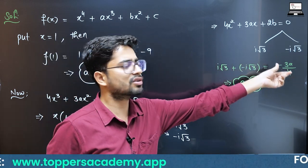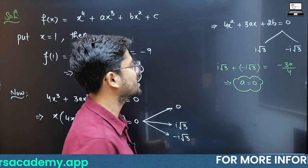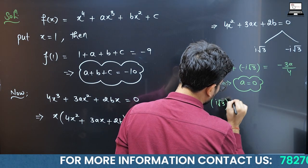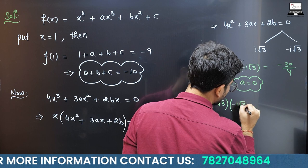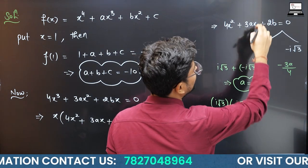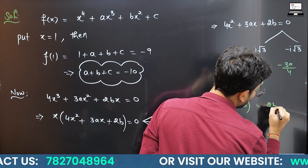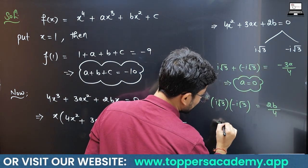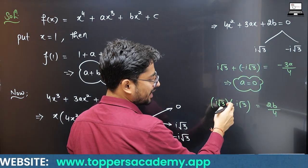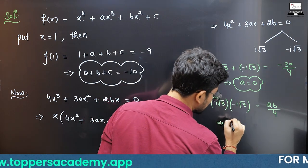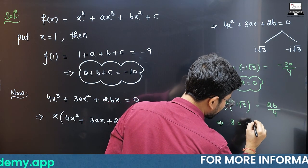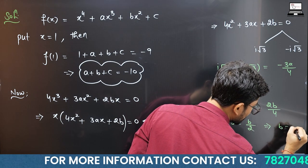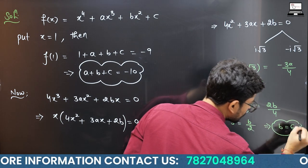Because the sum is 0, minus 3a/4 = 0, so a = 0. Now the product of roots: iota root 3 times (minus iota root 3) = 2b/4. Simplifying, iota squared is minus 1, so 3 = b/2, giving b = 6.